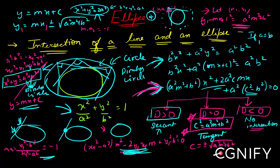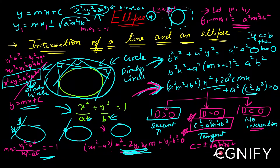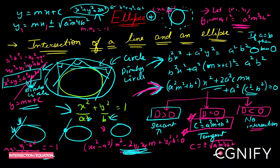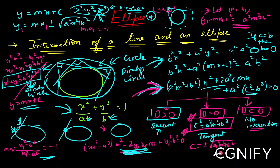Notice: if a = b, the ellipse becomes a circle. If you substitute a = b into the director circle equation x² + y² = a² + b², you get x² + y² = 2a², which matches the director circle of a circle. That is all for the intersection of a line and an ellipse and the equation of the director circle. Let's move on to the next topic.